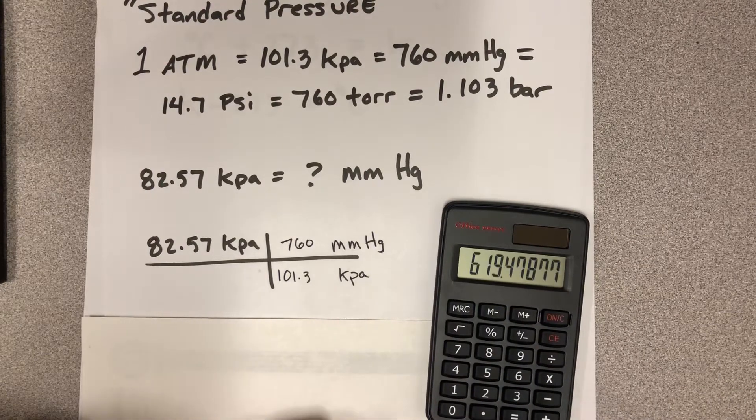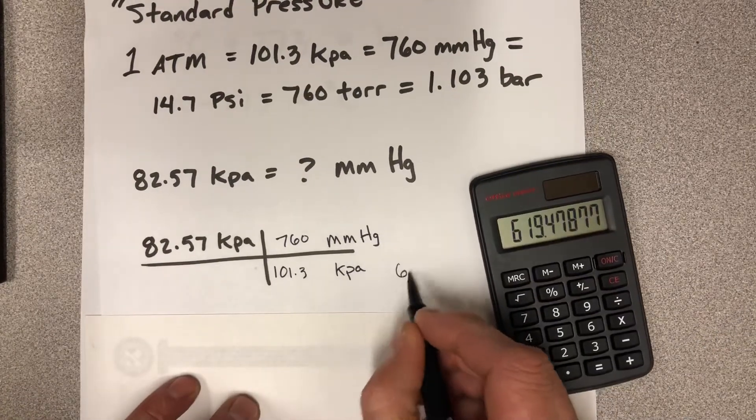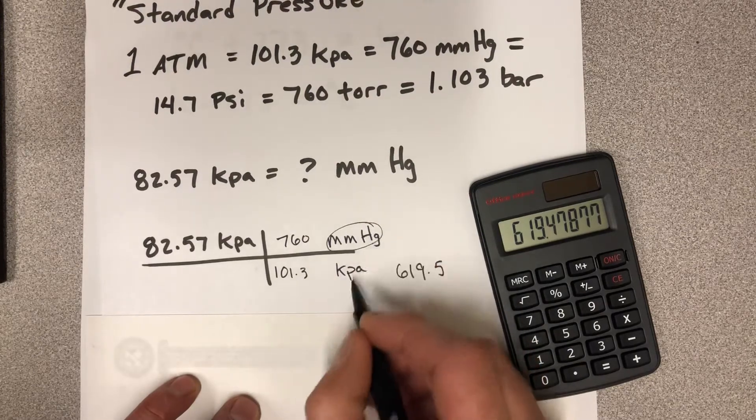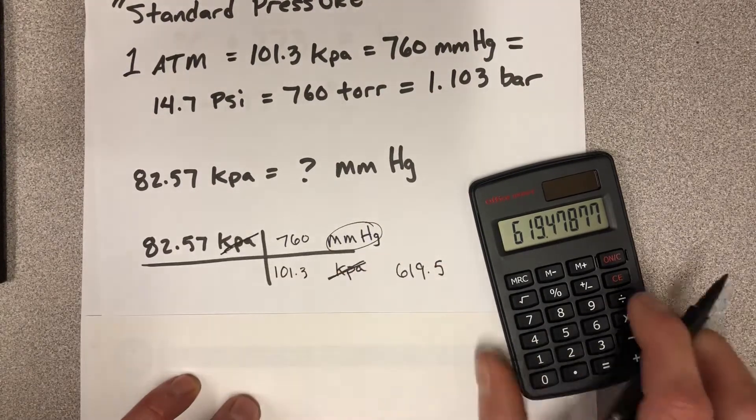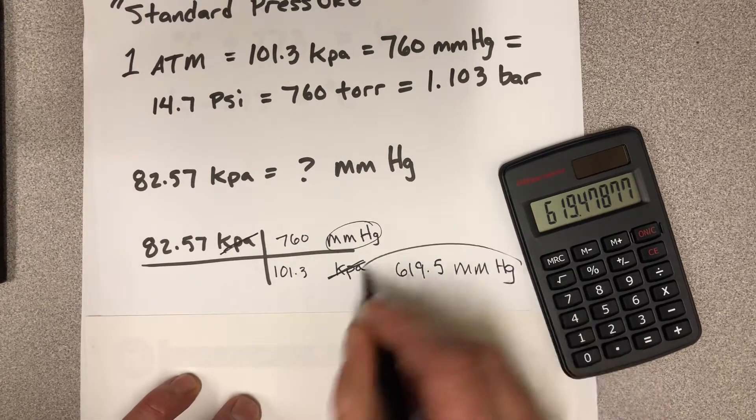And that gives you your answer of 619.5 millimeters of mercury, right? Kilopascals crosses away. And that's it.